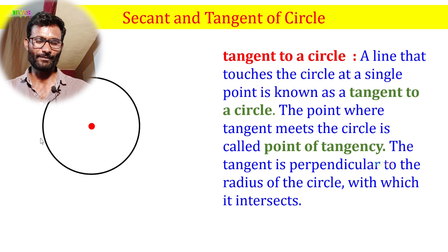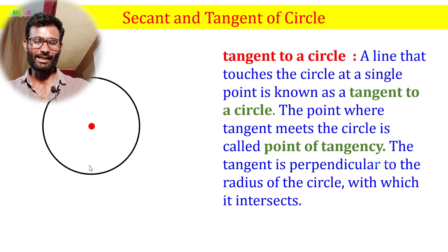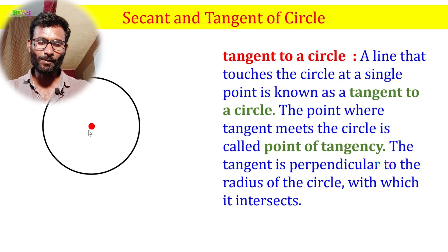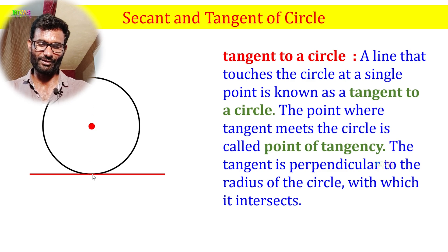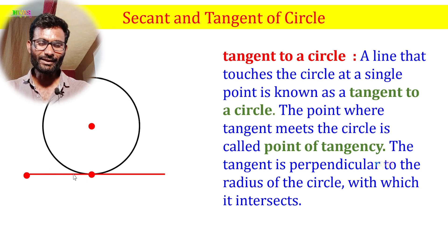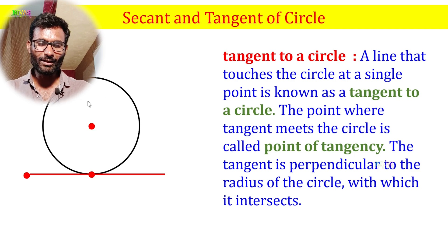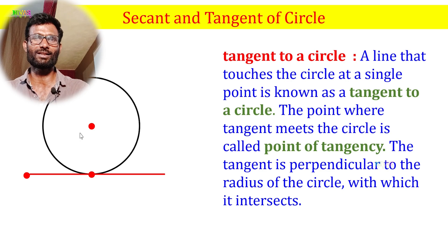A tangent to a circle is a line that touches the circle at a single point. The point where the tangent meets the circle is called the point of tangency. The tangent is perpendicular to the radius of the circle at the point where it intersects. When the line touches the circumference of the circle at one point, that line is the tangent.